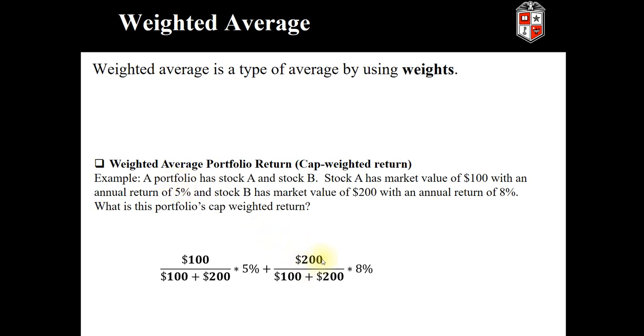The other 2 thirds of the portfolio is comprised of 8% return. So we take 200 over 300, which gives us the 2 thirds, and times that by 8.